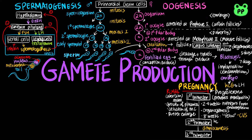During the second trimester, the fetus grows and is very active. Hormone levels stabilize as human chorionic gonadotropin secretion declines. The corpus luteum deteriorates and the placenta completely takes over the production of progesterone.